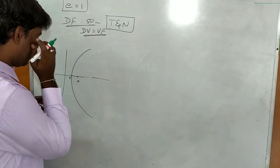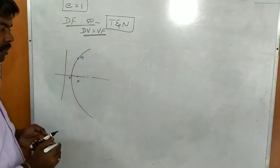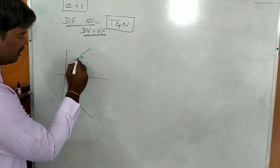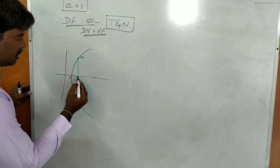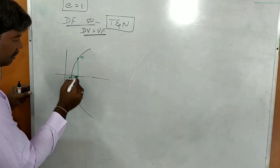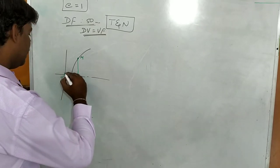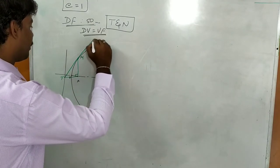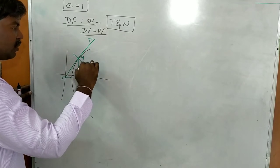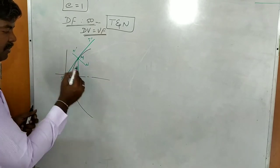First case: anywhere on the curve. Consider point M anywhere on the parabola — either top side or bottom, your choice. Join F and M using a drafter or scale. From F, drop a perpendicular line to the directrix; where it intersects the directrix, that point is called T. Then join T and M — that line is the tangent T-T-dash. Draw a perpendicular to T-T-dash passing through M — that is the normal N-N-dash.